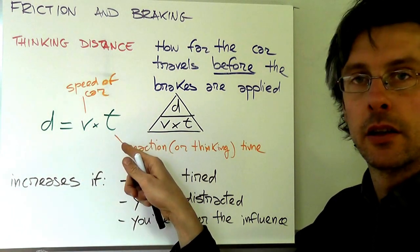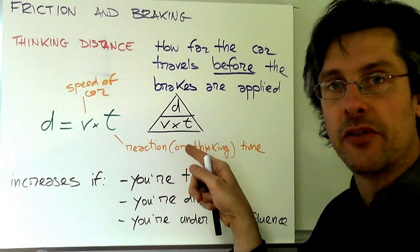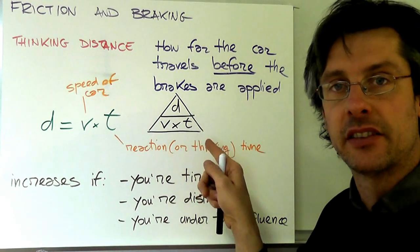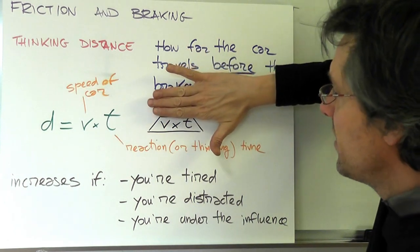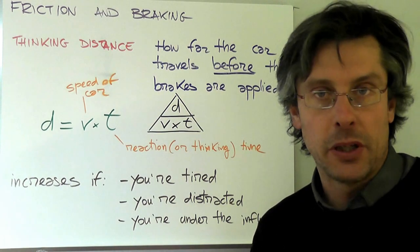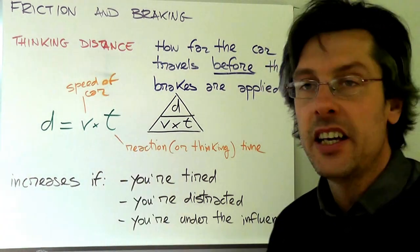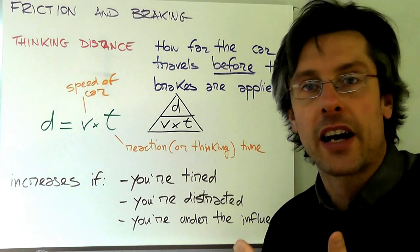By using the magic triangle that links distance, speed, and time, we can easily see that distance is equal to the speed times the time: d = V × t, where V is the speed of your car and t is what I called previously the thinking or reaction time.